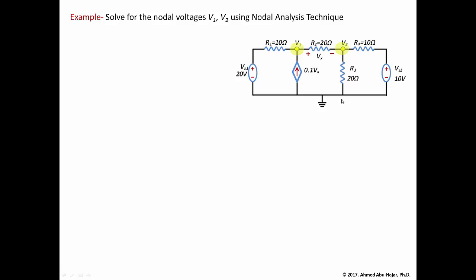Once you have determined all the nodes and the unknown nodes in the circuit, the next thing you need to recognize is that there is a dependent source connected in the circuit. This is a current source because it has an arrow. The value of this current source depends on Vx. Basically, this current will equal 0.1 times Vx. So you need to look at Vx in the circuit. Vx is defined as the voltage across the 20-ohm resistor R2, and when you do nodal analysis, you need to define Vx in terms of the nodal voltages.